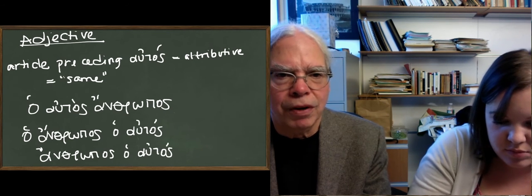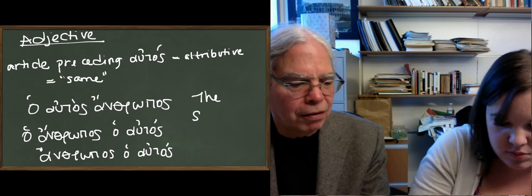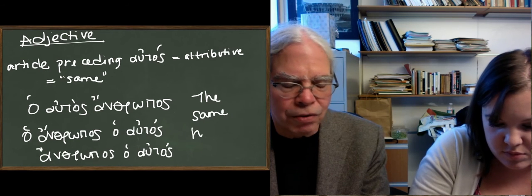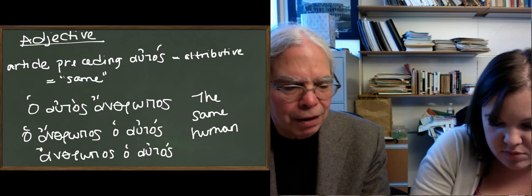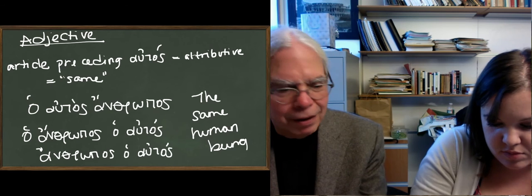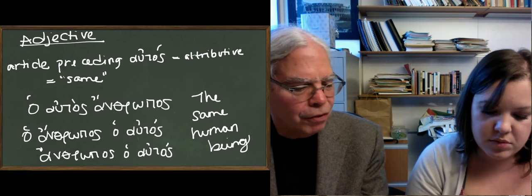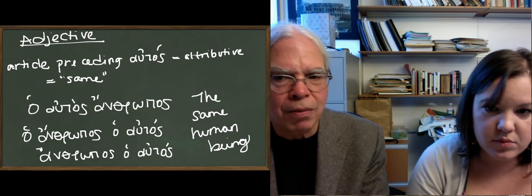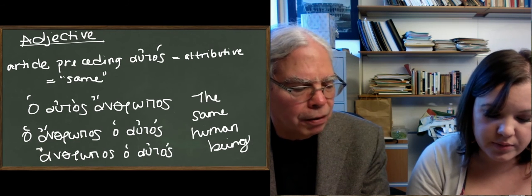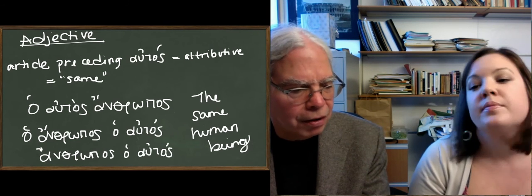Those are all examples of autos in the attributive position, and they all mean the same human being in English. So that's very distinctive meaning, the word, the English adjective same, from him and her and it and them. There's no way in which you could confuse those in English, but it's the same word formally in Greek, but in terms of syntax not.